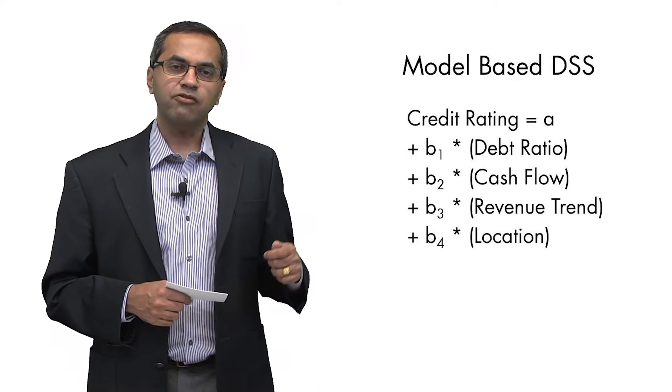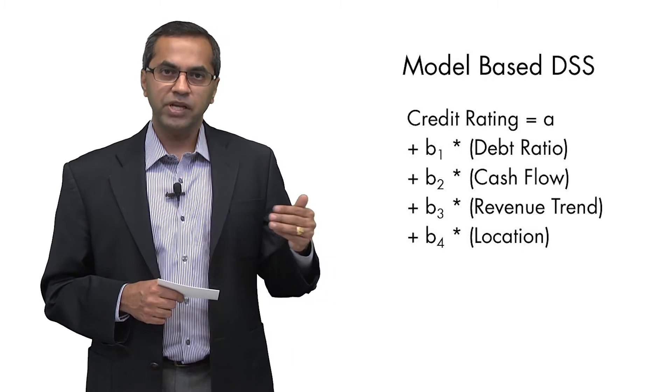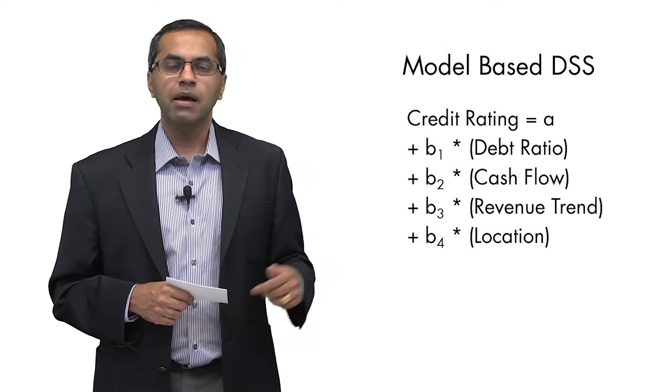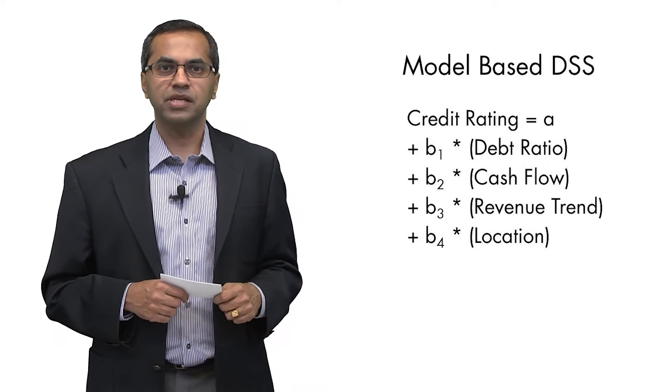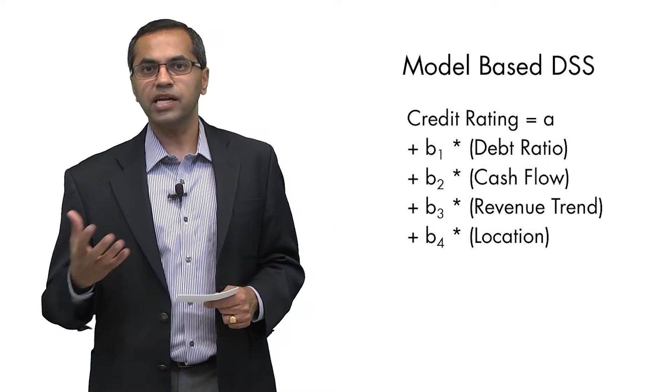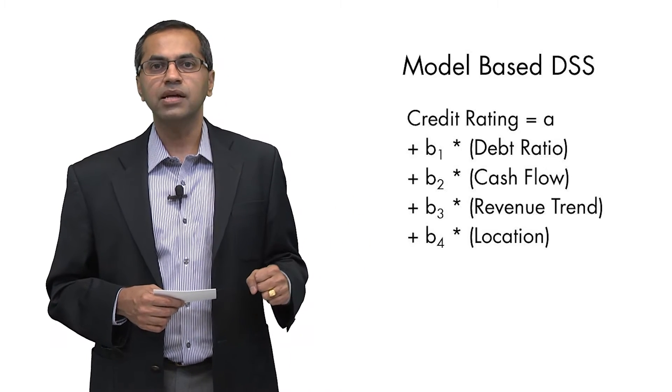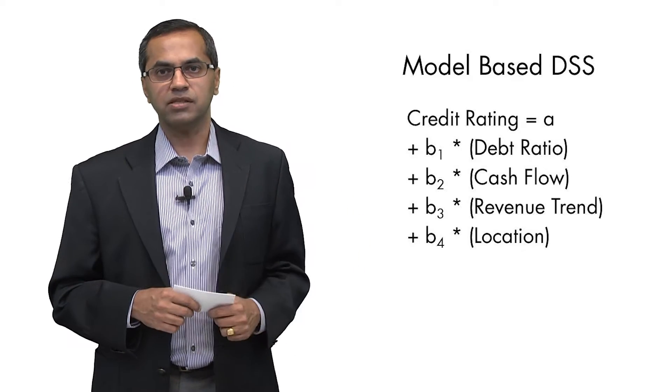Alternately, you could keep track of previous applications where you had information on these attributes or the cues as we call them, monitor the success of these companies, and then use a regression kind of analysis to come up with the true values of A and B1 and B2 and B3 that best describe that success.